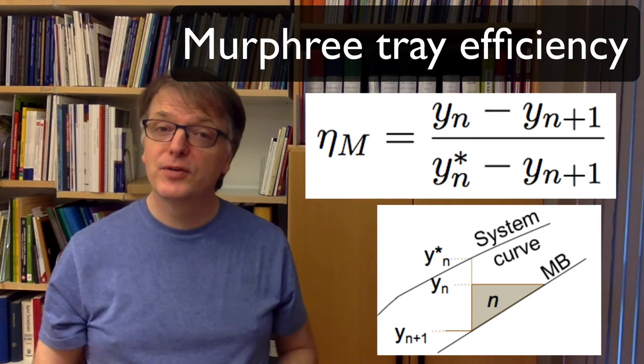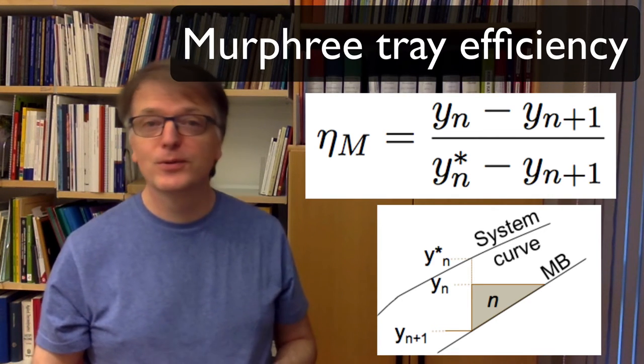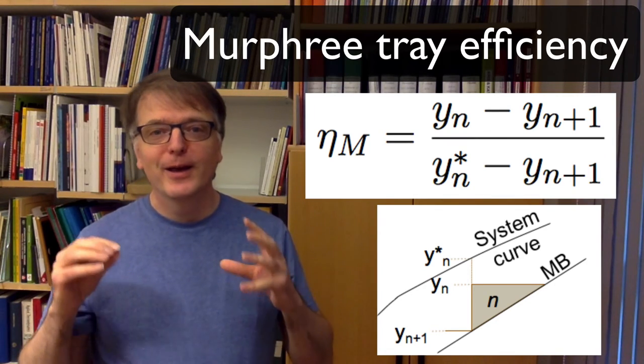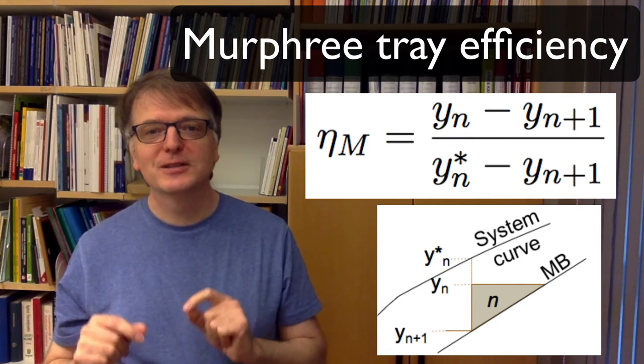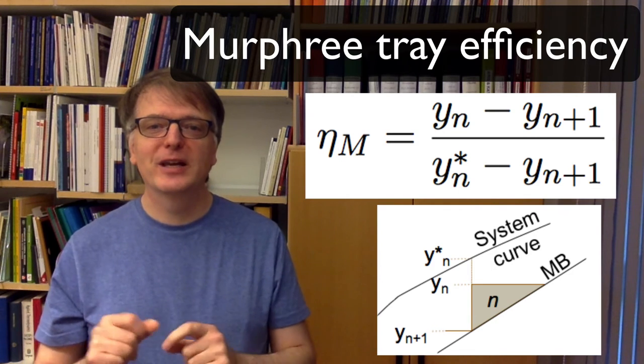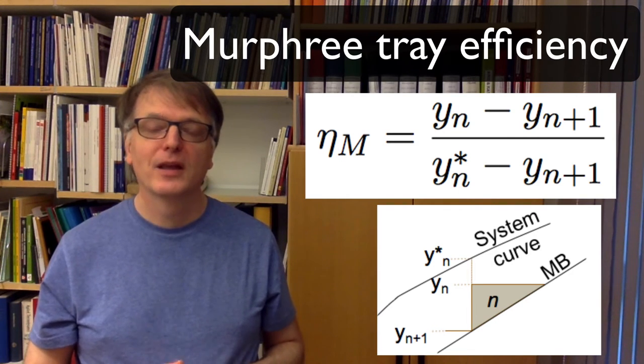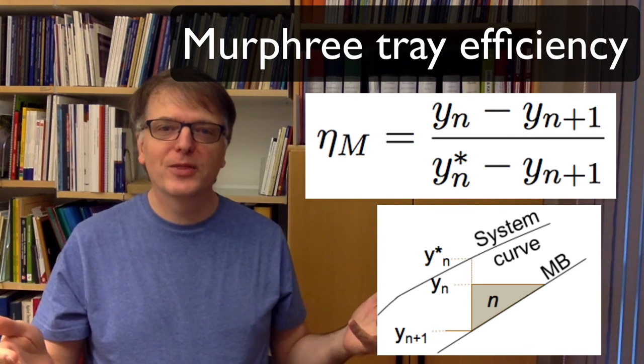A problem with the Murphy tray efficiency is that you potentially at least can have one tray efficiency for every single tray you have in the column. So how to get those numbers?